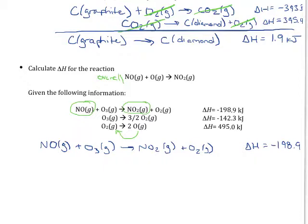We don't want the ozone (O₃), so to get rid of it, I need O₃ on the product side for the next reaction so it cancels. The only way to do that is to flip the middle reaction. If I flip it, I get three-halves O₂ gas making O₃. Since I flipped the reaction, I need to flip the sign on the enthalpy, so this becomes positive 142.3 kilojoules.